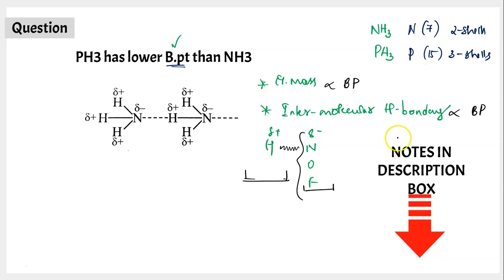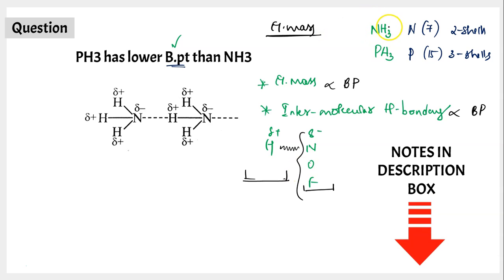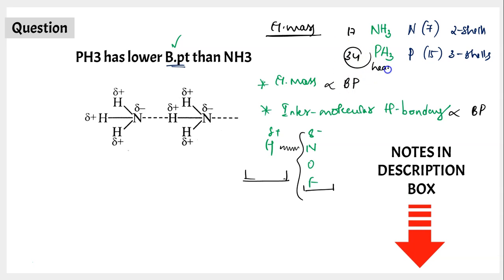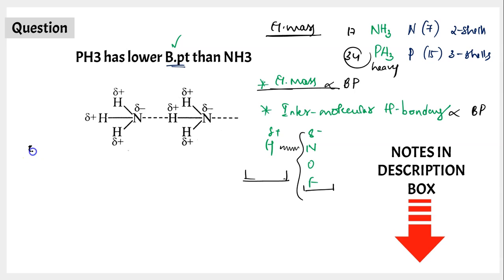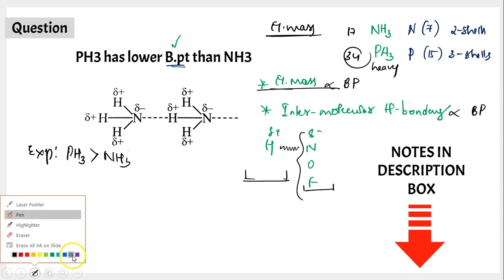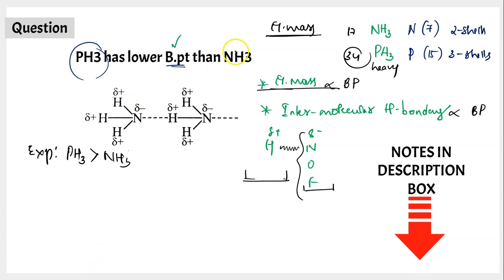For NH3, the molecular mass is 14 + 3 = 17 g/mol. For PH3, the molecular mass is 31 + 3 = 34 g/mol. Since PH3 is heavier, we would expect PH3 to have a higher boiling point than NH3. But the question states that PH3 has a lower boiling point than NH3 — the reality contradicts our expectation. So molecular mass alone is not sufficient here.